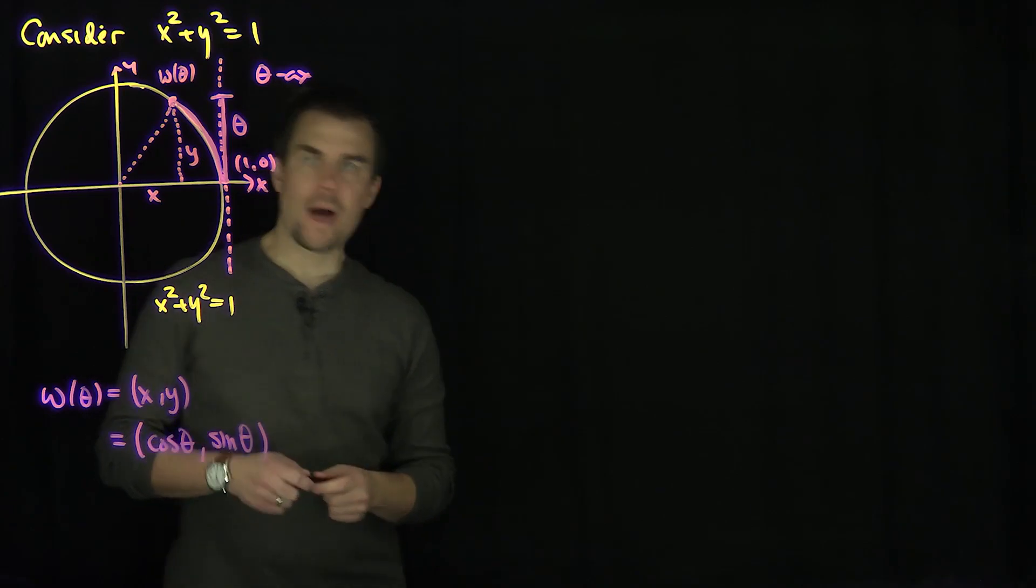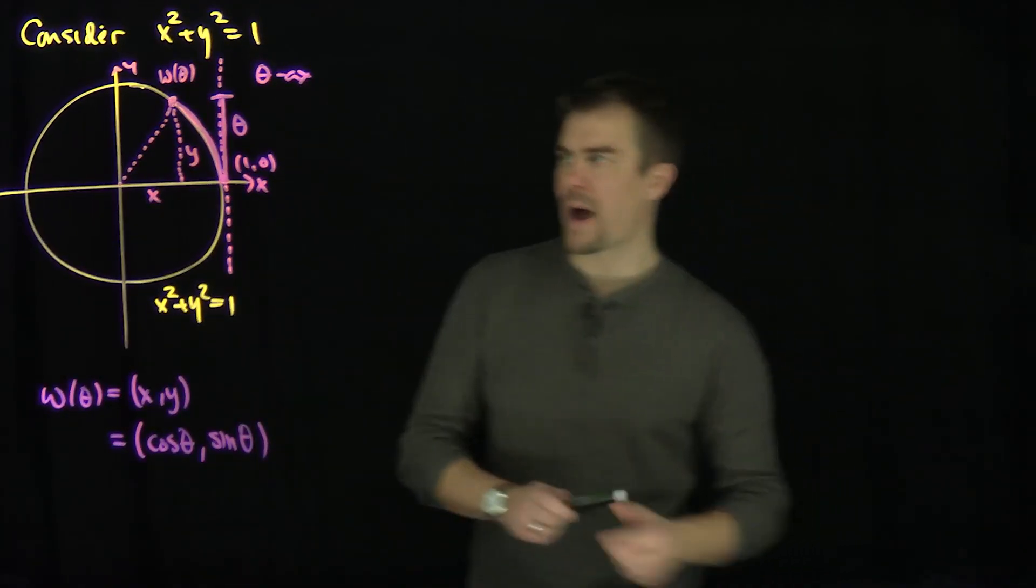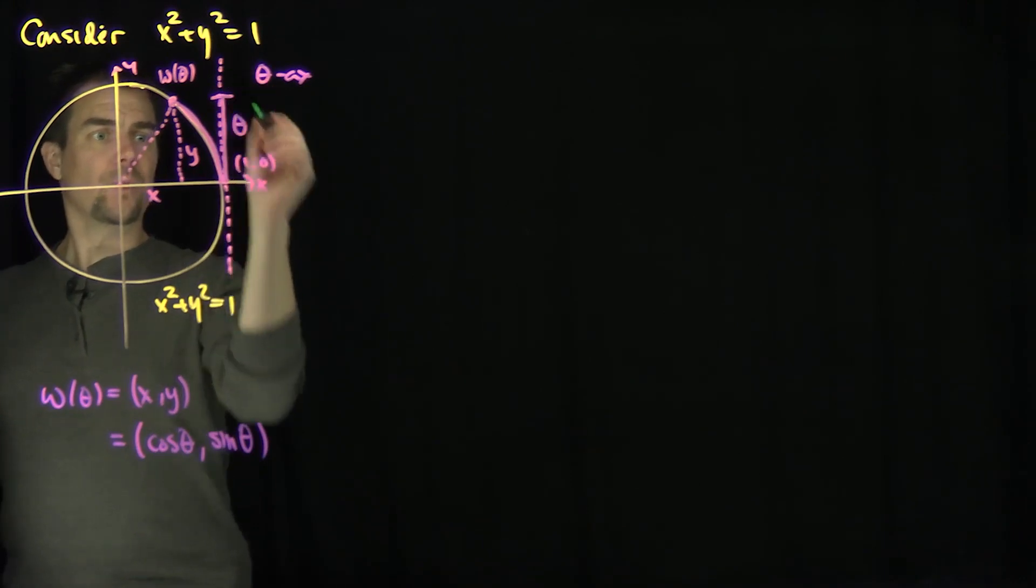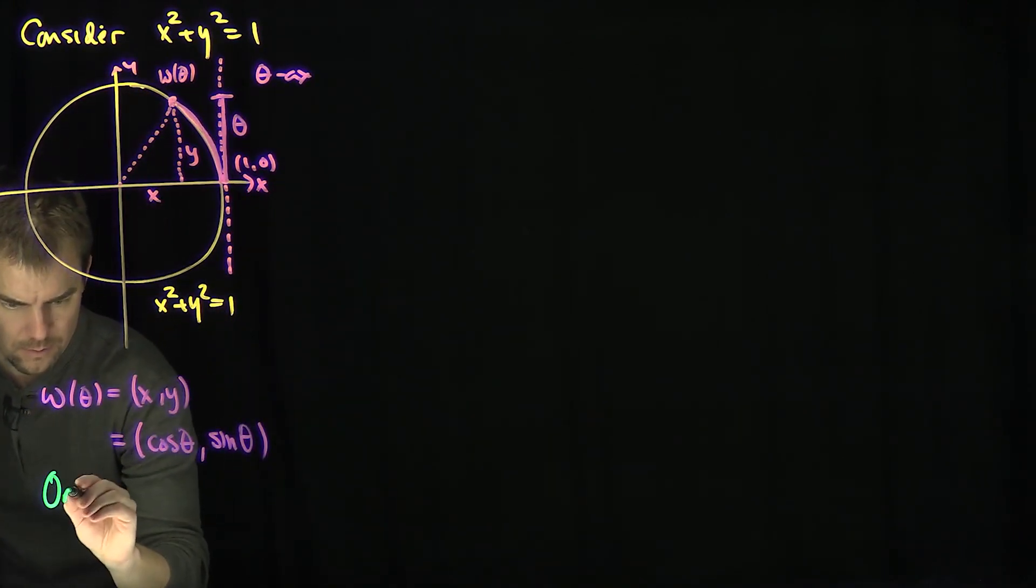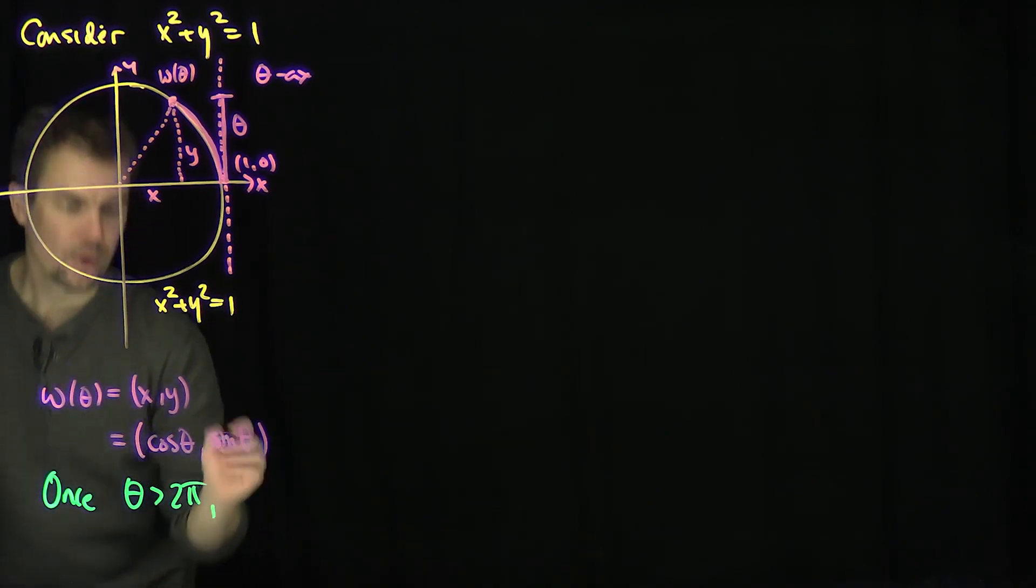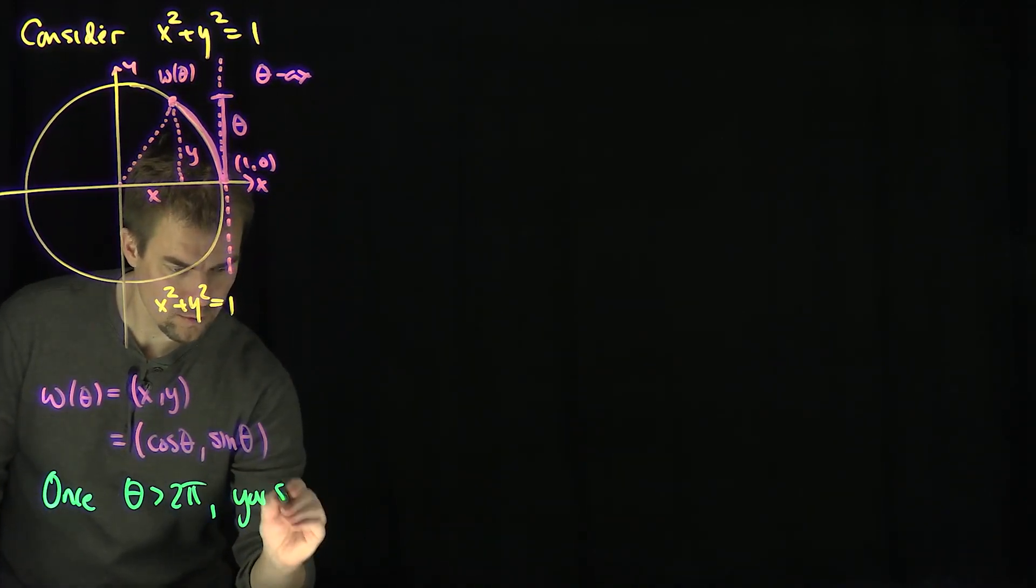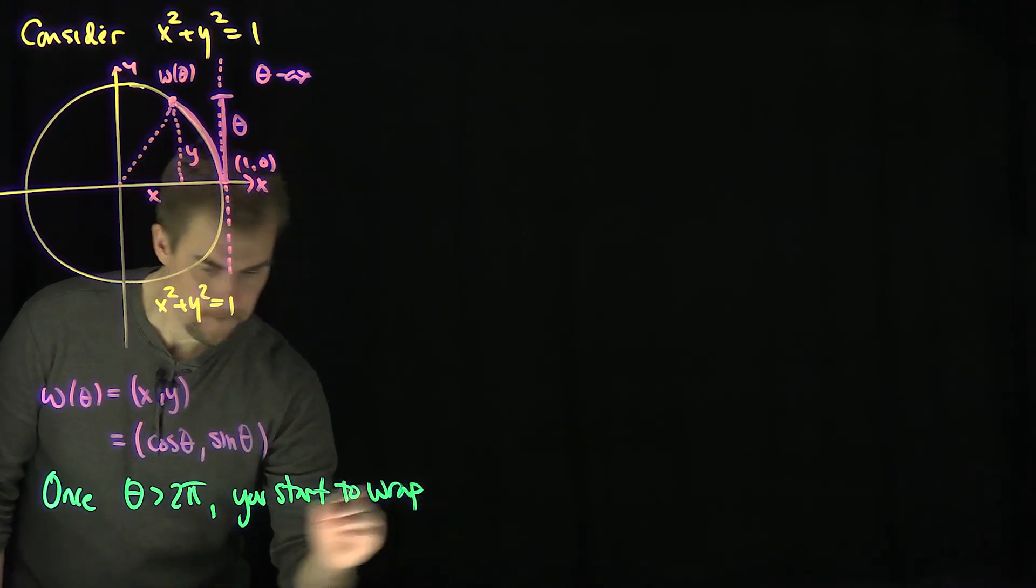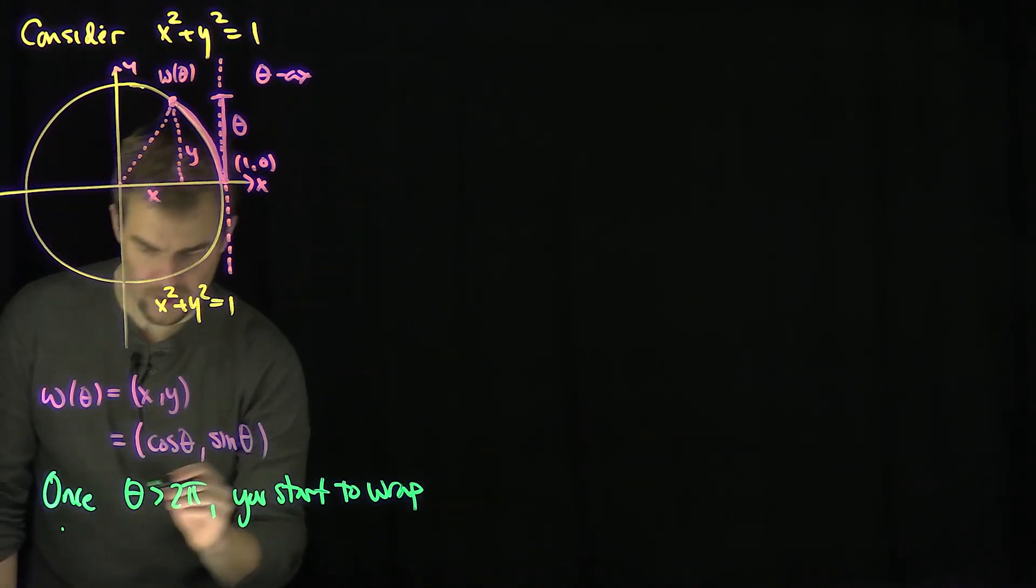Now, it's important to realize that when we do this wrapping, what happens when we do this wrapping around, once theta gets past 2 pi, so once theta bigger than 2 pi, you start to rewrap. Again.